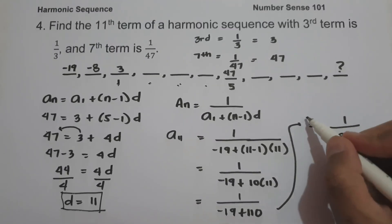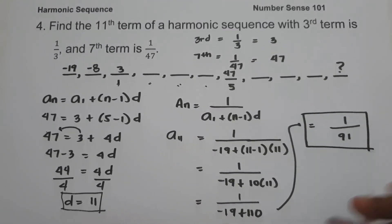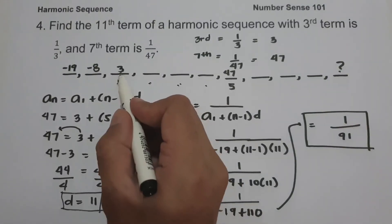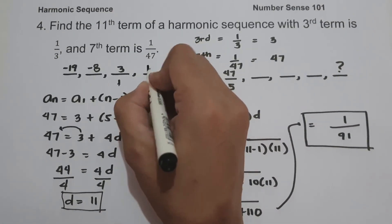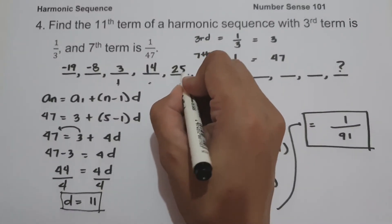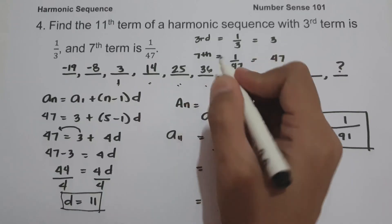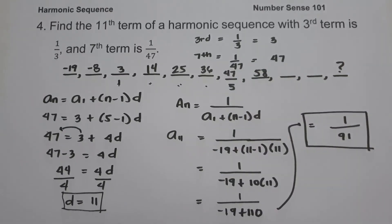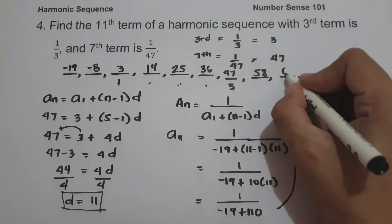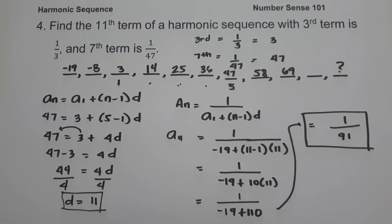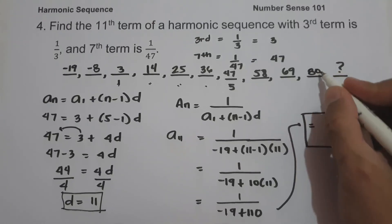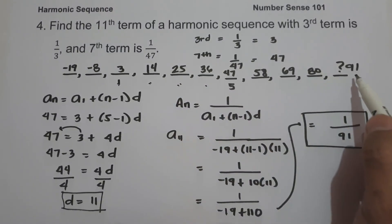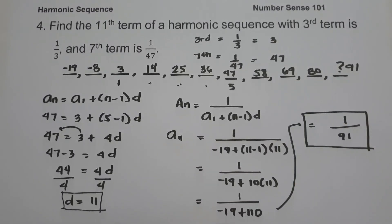So the 11th term in the given sequence is 1/91. We can verify using the pattern: starting from 3, adding 11 each time gives 3, 14, 25, 36, 47, 58, 69, 80, 91. The reciprocal of the 11th term, 91, confirms our answer of 1/91.